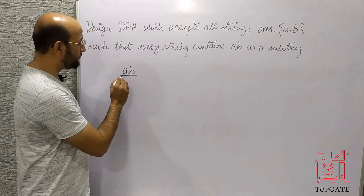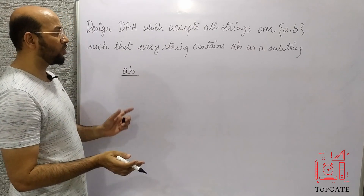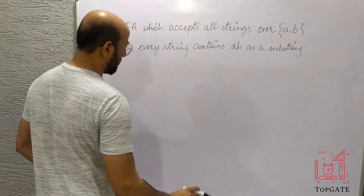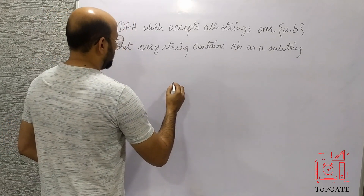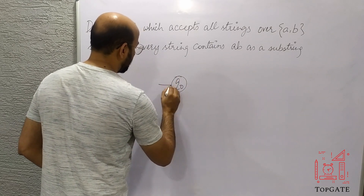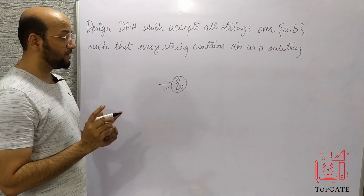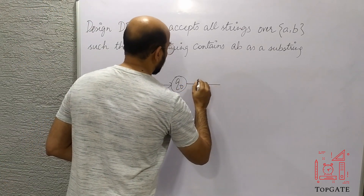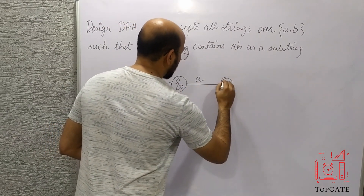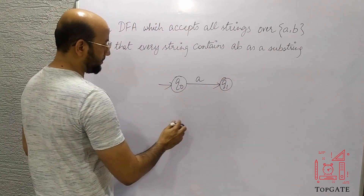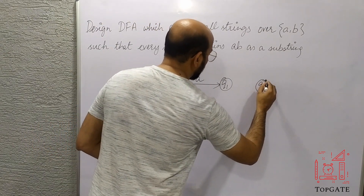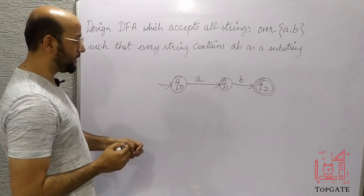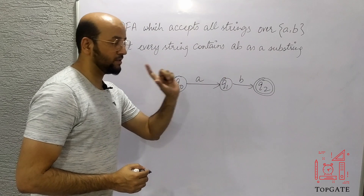I'll design a DFA for this minimum string first, then incorporate all the possibilities. Starting with state q0 as the initial state, from q0 to q1 I'll go with 'a'. Then I'll take state q2 as the final state, and from q1 to q2 I'll go with 'b'. In this way I'm getting 'AB' as a substring.